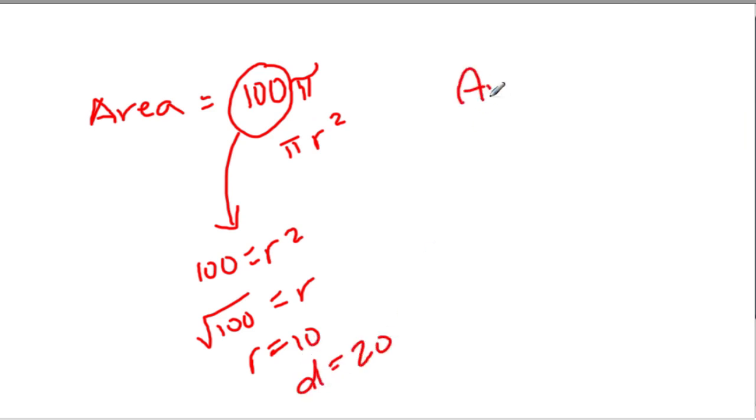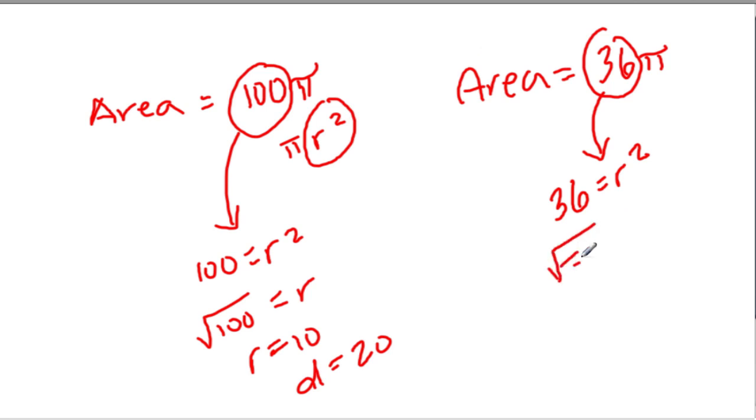Let's look at another one. Let's say your area equals 36 pi. Same idea. This number, 36 equals your radius squared. Right? It's right there in the equation. Whatever number you have multiplied by pi is radius squared. So the radius is just the square root of that number. The square root of 36 is just 6. And r, the radius is 6, and diameter is 12.